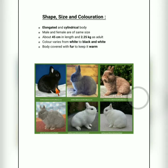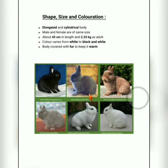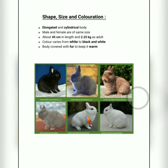Regarding shape, size and coloration: the body of the rabbit is elongated — that is longer — and more or less cylindrical in shape. An average normal adult will be approximately 45 centimeters in length and 2.25 kg in weight.